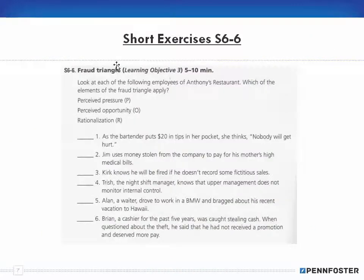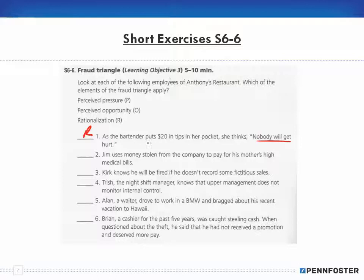6-6 asks us to look at employees of Anthony's Restaurant and identify which element of the fraud triangle applies: perceived pressure, perceived opportunity, or rationalization. The bartender puts $20 in tips in her pocket thinking nobody will get hurt — that's a rationalization, just an excuse.